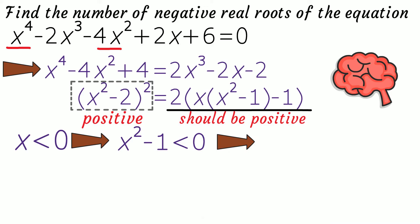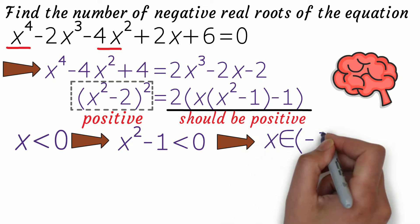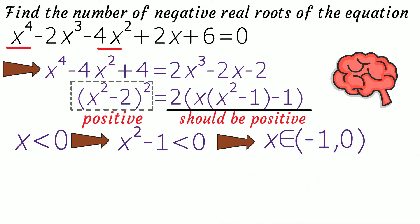So, taking x² - 1 < 0, we get x ∈ (-1, 0). This implies x(x² - 1) is for sure less than 1.